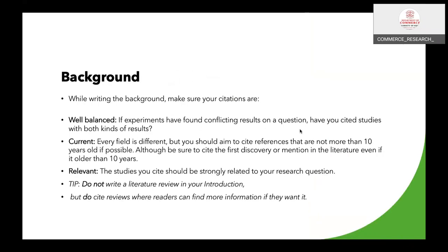When writing the background, make sure the citations are well-balanced. If experiments have found conflicting results, cite studies with both kinds of results. Citations should ideally be less than 10 years old. If some citations are more than 10 years old, they should be appropriate to the content. Your citations must be relevant — the studies you cite should be strongly related to your research question; otherwise, citations are out of the purview of your study. Do not write a literature review in your introduction. You can cite what others find useful, but it is not good to review or cite everything in the introduction. What you cite should be part of the work and something readers would be interested in.